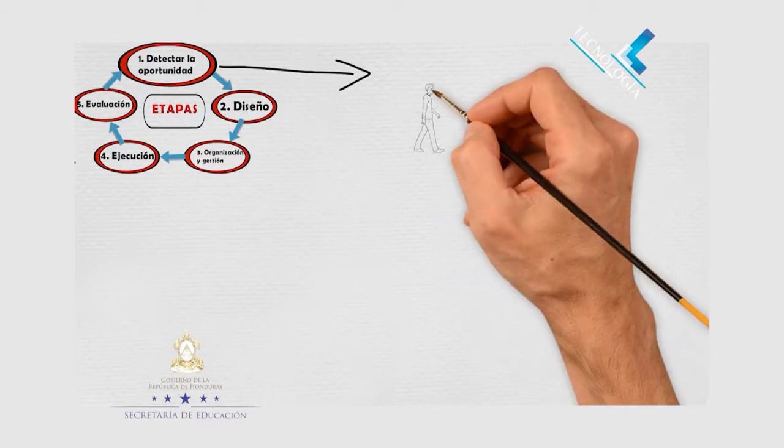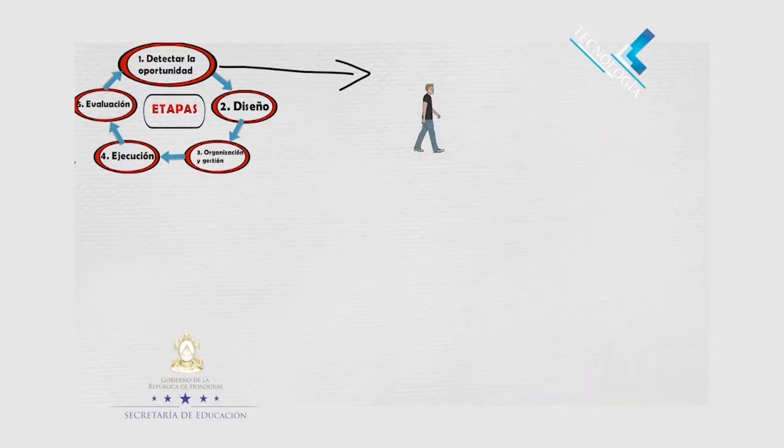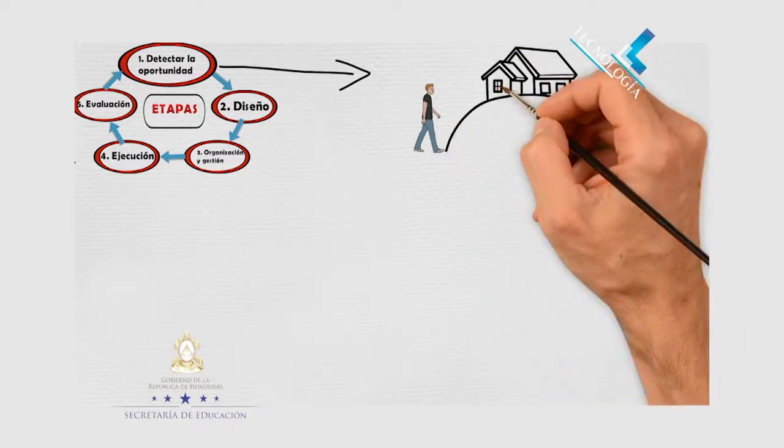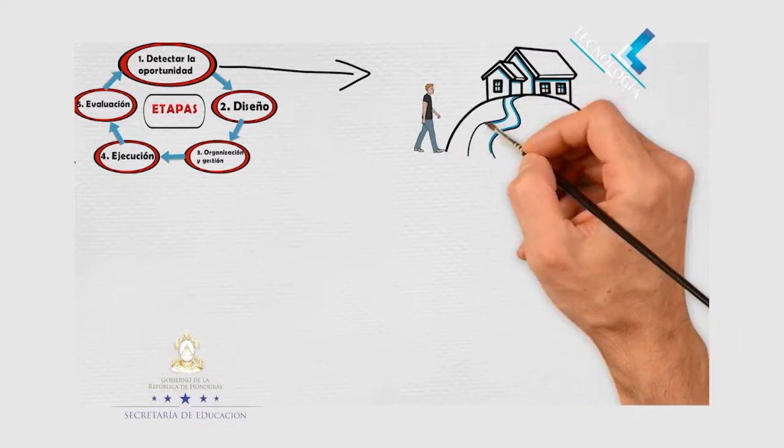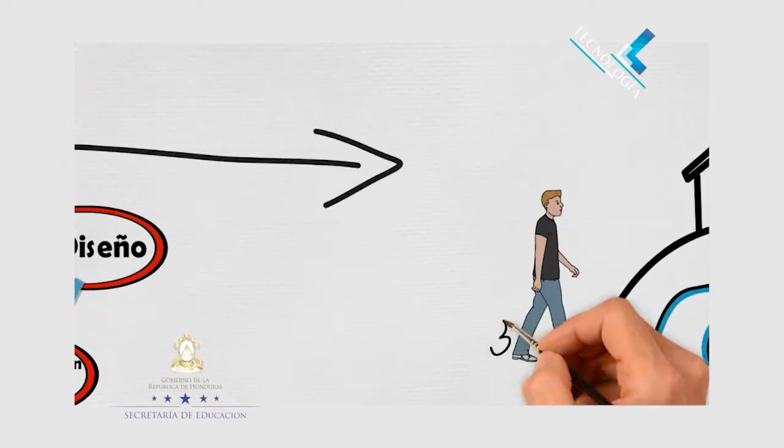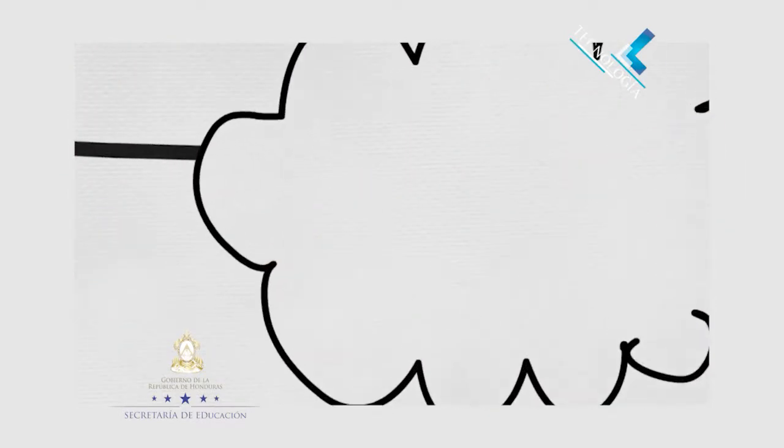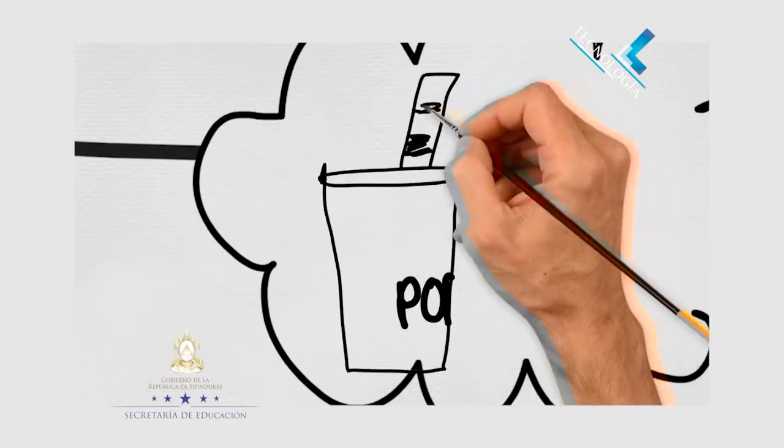Un ejemplo de ello sería, imaginémonos, vamos caminando de la escuela a la casa y tenemos la necesidad de consumir algo helado porque hace muchísima calor. Pero no hay en el camino ningún lugar que nos venda algo así y no podemos satisfacer esa necesidad.